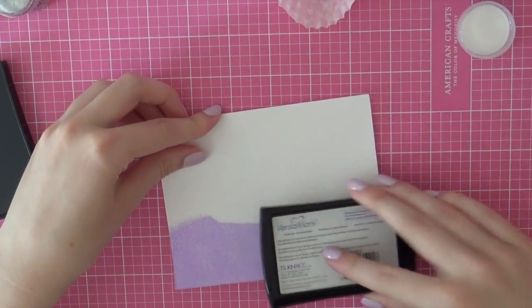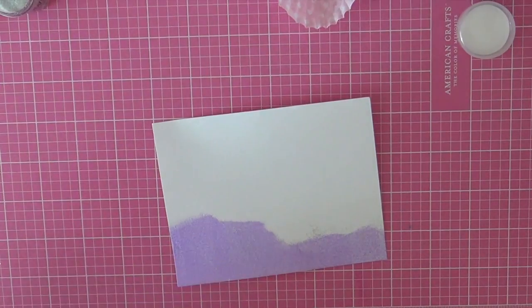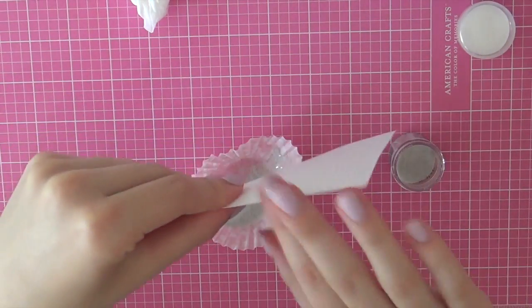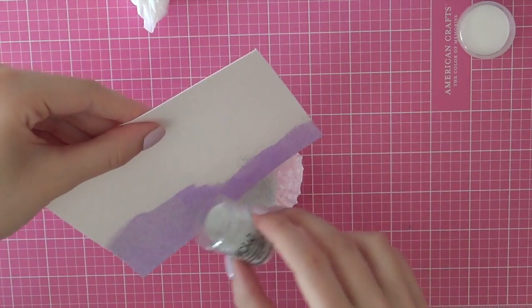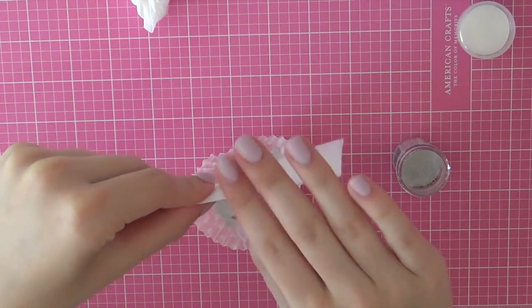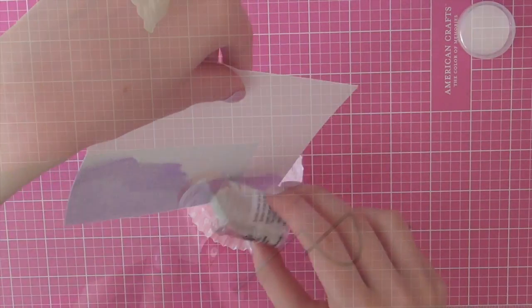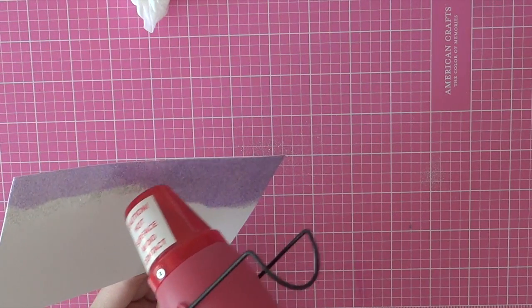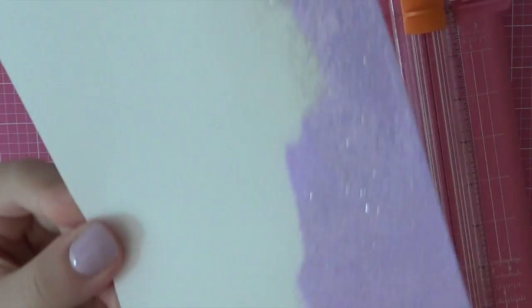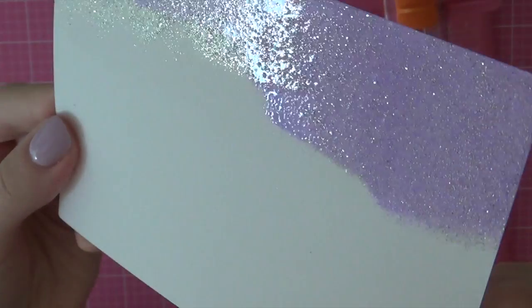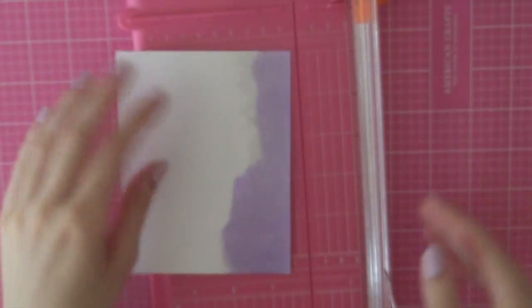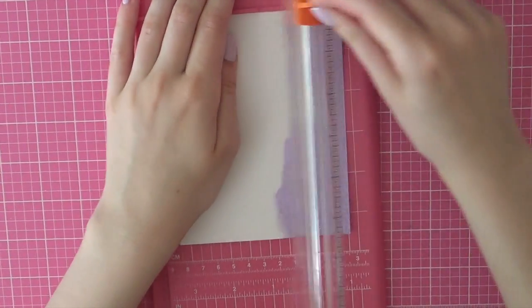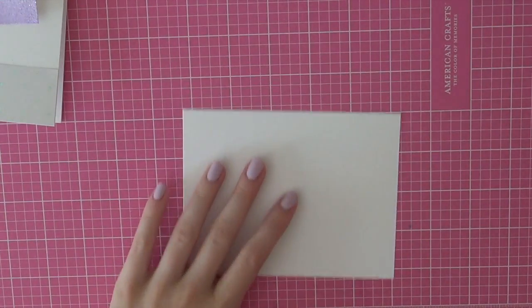And then I'm going to heat set that powder using my heat tool and I wanted to add some sparkle to that purple paper so I'm going to press down my ink pad once again and then I am going to sprinkle on the silver hologram sparkle embossing powder by WOW. So I sprinkle that on and then I am going to heat set that powder and then you will be left with a beautiful and sparkly purple embossed paper. This is just a really nice way to create your own colored cardstock or your own glitter paper.